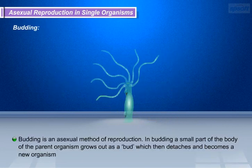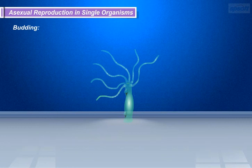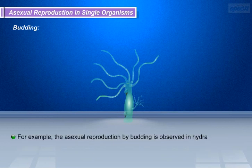Next we move on to budding. Budding is an asexual method of reproduction in which a small part of the body of the parent organism grows out as a bud, which then detaches and becomes a new organism. For example, asexual reproduction by budding is observed in Hydra.